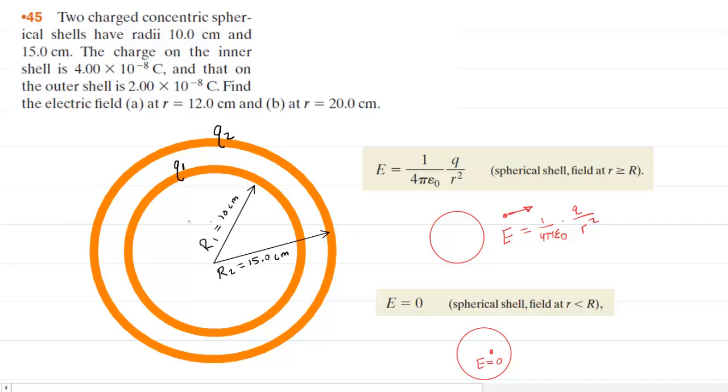We've gone ahead and drawn two charged concentric spherical shells. One has a radius of 10 centimeters, which we've denoted capital R subscript 1, and the other larger shell has a radius of 15 centimeters, which we've denoted capital R subscript 2.